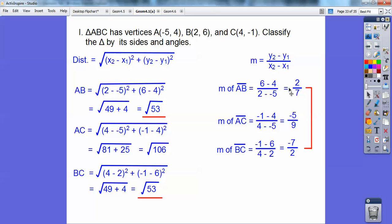And then look, the slope of AB is 2 sevenths. The slope of BC is the opposite reciprocal, negative 7 halves. So that's a right angle because they're perpendicular. These guys are perpendicular. So that tells me it's an isosceles right triangle.